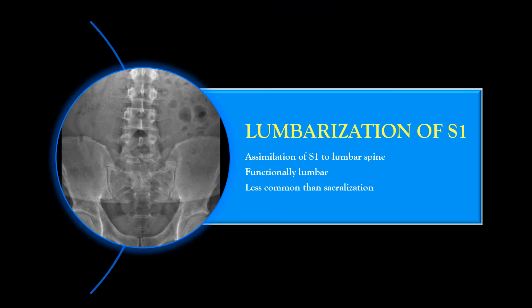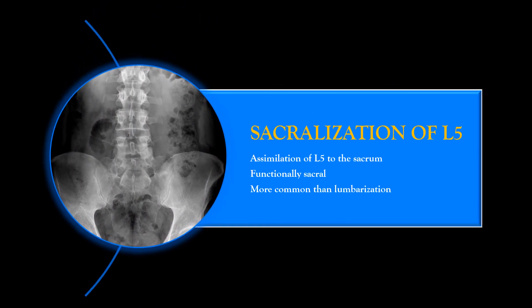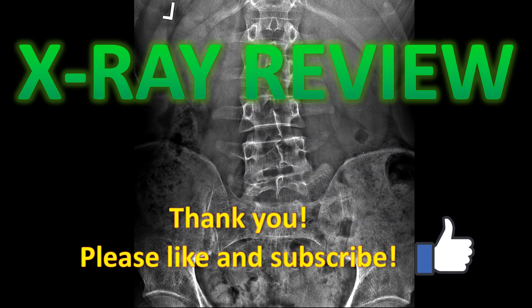A couple of other terms you should know: lumbarization of S1 is assimilation of S1 to the lumbar spine, making it functionally lumbar — this is not that common. There's also sacralization of L5, which is assimilation of L5 to the sacrum, making it functionally sacral — this is more common. I prefer the Castelvei classification system, but lumbarization and sacralization do refer to lumbosacral transitional segments.